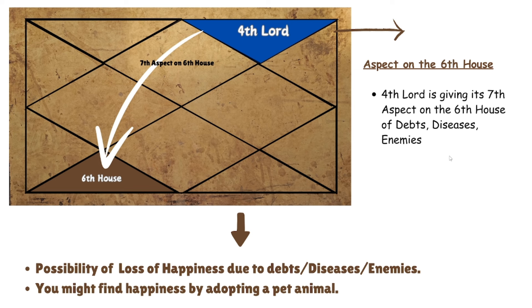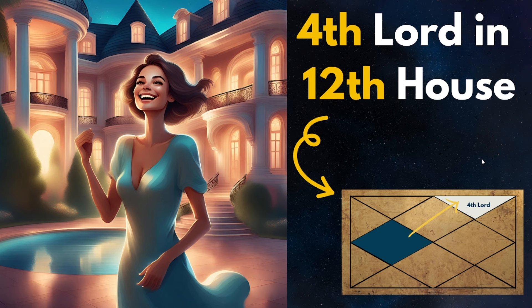The fourth lord sitting in the twelfth house gives its seventh aspect on the sixth house, which is again a dushthana house of debt, diseases, and enemies. During the respective mahadasha and antardasha there is a possibility of loss of happiness due to debt, disease, or enemies creating obstacles in your life path. You might also get happiness by adopting a pet animal during this time, because the sixth house is the house of pet animals. In future I will make separate videos for each type of planet as the fourth lord in the twelfth house.